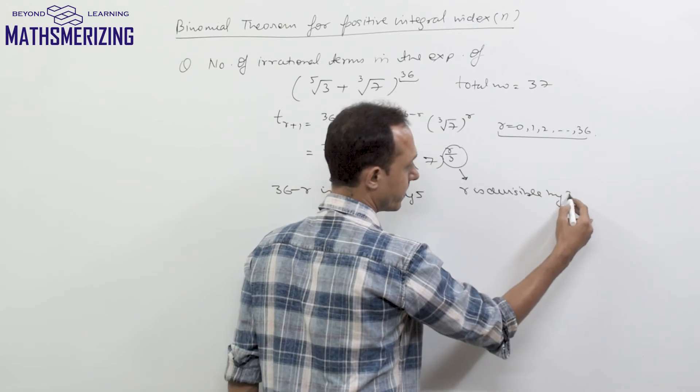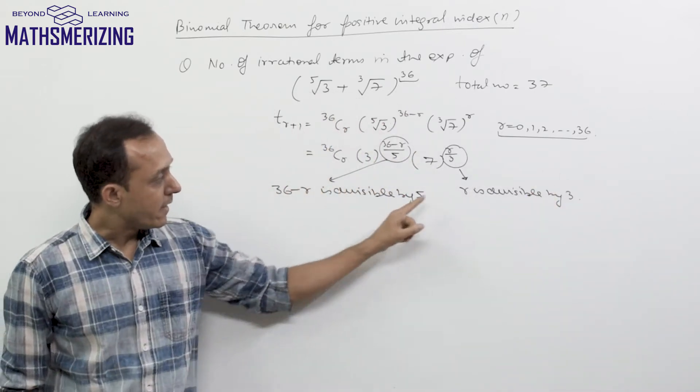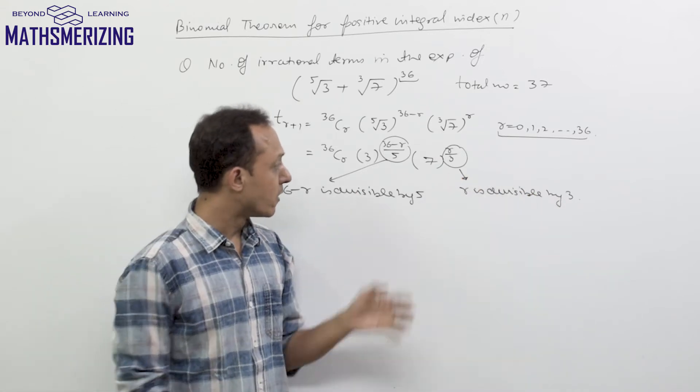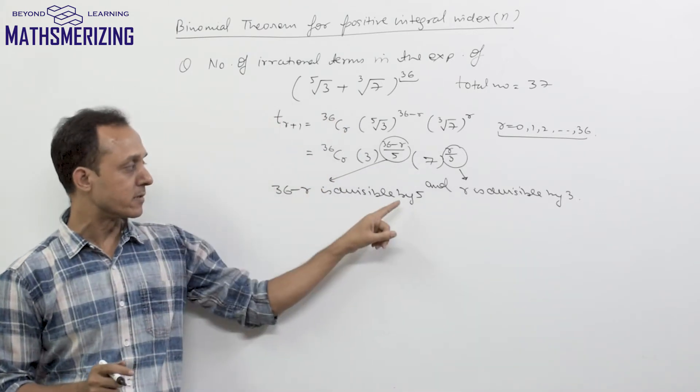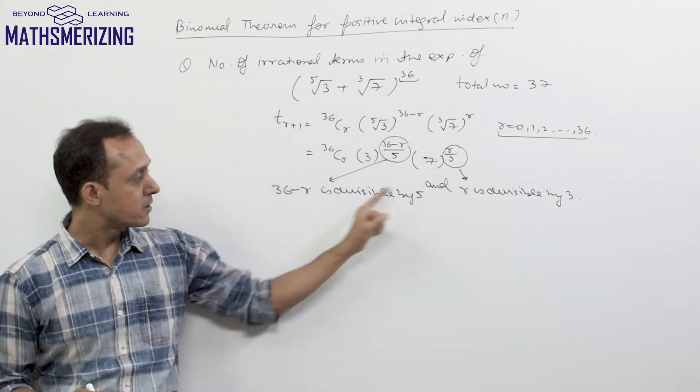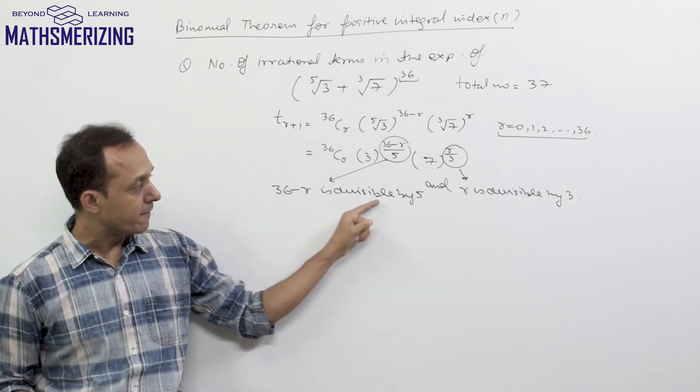So 36 minus r is divisible by 5 and r is divisible by 3 for all those values of r. And it should be an AND because I need both the conditions to hold simultaneously, so for all the values for which r is divisible by 3 and 36 minus r is divisible by 5.